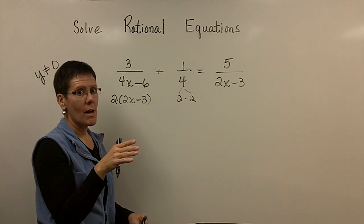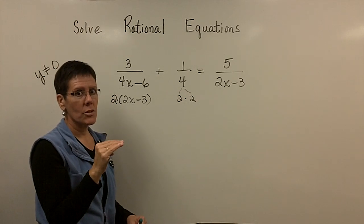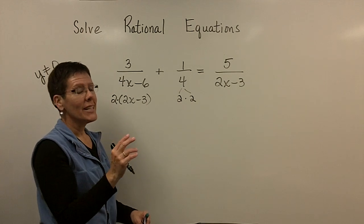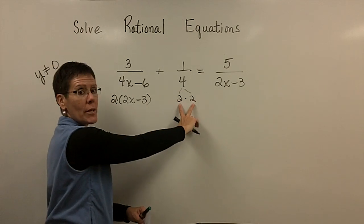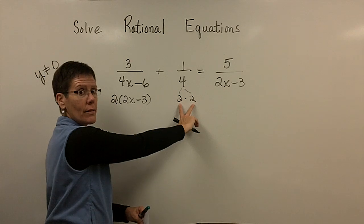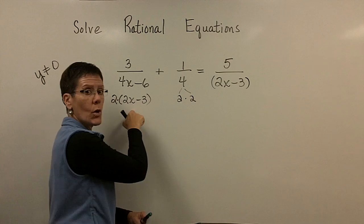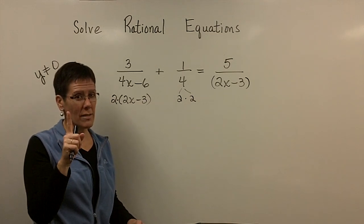So the least common denominator has the greatest number of times they occur in any one denominator. So the LCD is going to be 4 times the 2x minus 3. Because the 2x minus 3 occurs here once and there once. The greatest number of times is once.